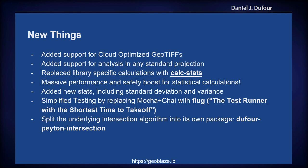We've added a few new things. We've added support for cloud-optimized GeoTIFFs, and support for analysis in any standard projection — in other words, projections that have an EPSG code. We replaced the library-specific calculation code we had written just for GeoBlaze with another package that handles statistical calculations, which has led to a massive performance and memory safety boost for statistical calculations, and added new statistics. We also refactored the testing, and split out the underlying intersection algorithm into its own package. That's being used right now in another package called GeoMask, which can mask areas within an image.